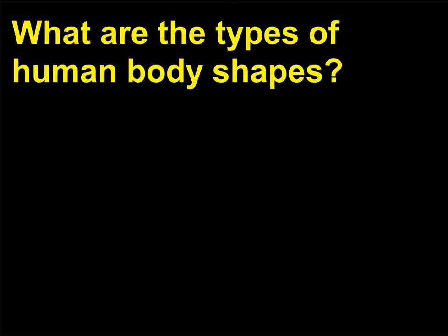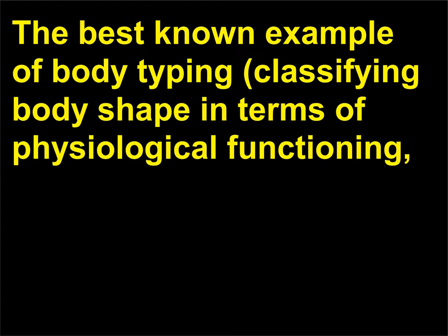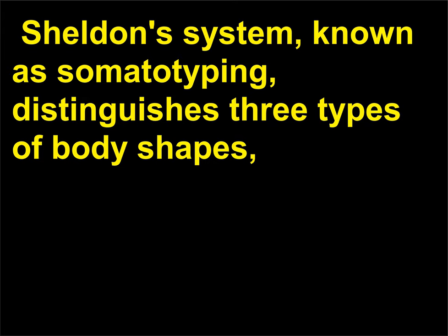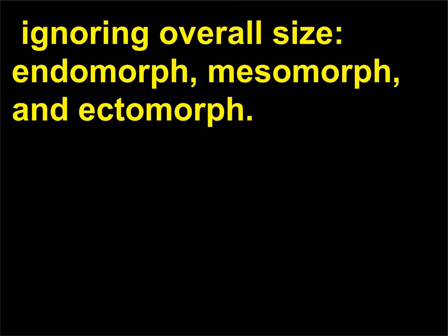What are the types of human body shapes? The best-known example of body typing — classifying body shape in terms of physiological functioning, behavior, and disease resistance — was devised by American psychologist William Herbert Sheldon (1898–1977). Sheldon's system, known as somatotyping, distinguishes three types of body shapes, ignoring overall size: endomorph, mesomorph, and ectomorph.